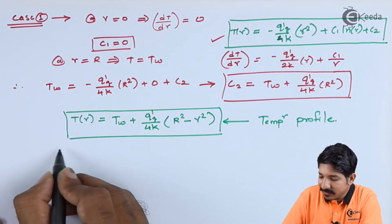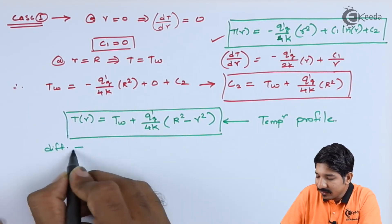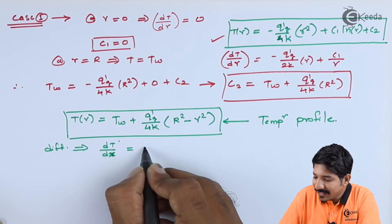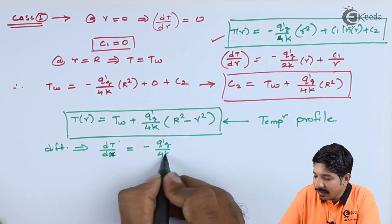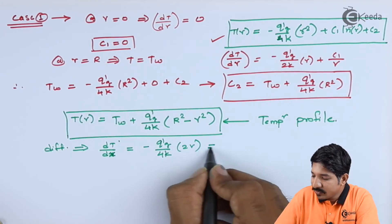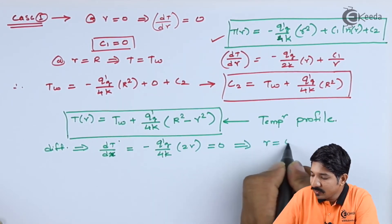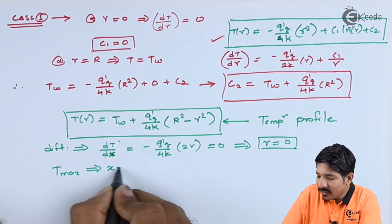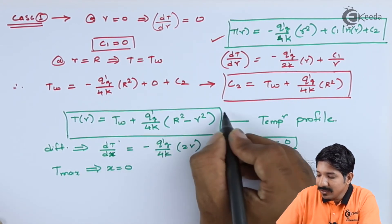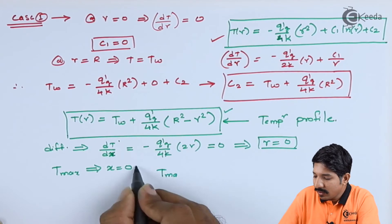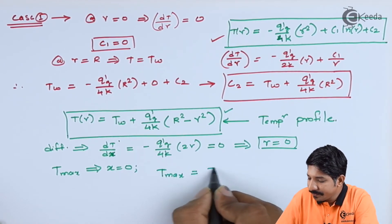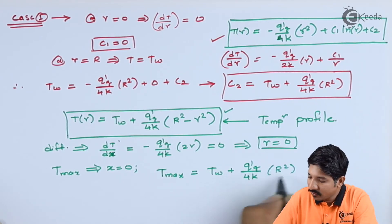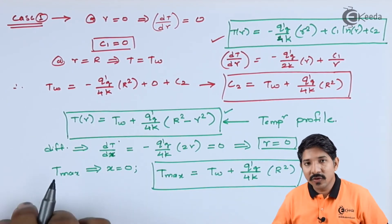To find T_max, differentiate T(r) with respect to r: dT/dr = -Q'_G/(4K) · 2r. Setting this to zero gives r = 0, so T_max lies at r = 0. Substituting r = 0 into the temperature profile gives T_max. This is how we solve the first case.